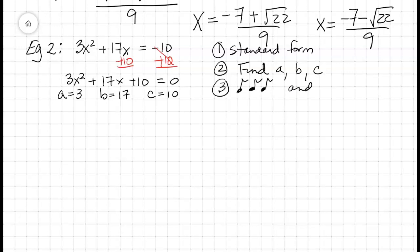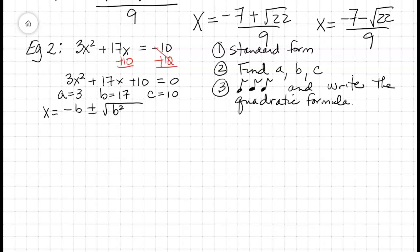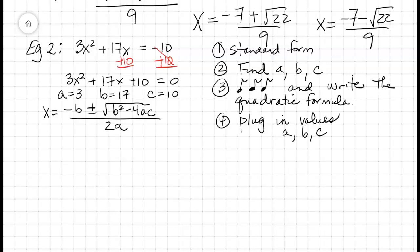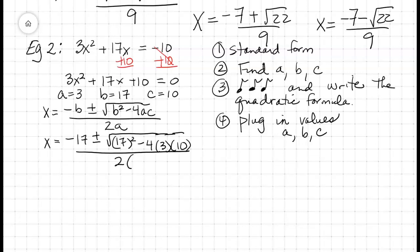We're going to sing and write the quadratic formula — not just sing it, but write it as well. Everybody ready? Here we go. X equals negative B, plus or minus radical B squared minus 4AC, all over 2A. Now that we've sung the song, all we need to do is plug it in — plug in the values for A, B, and C. X equals negative 17, plus or minus the square root of 17 squared, minus 4 times 3 times 10, all over 2 times 3.